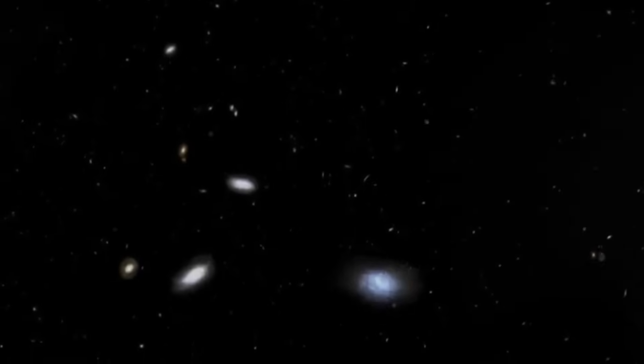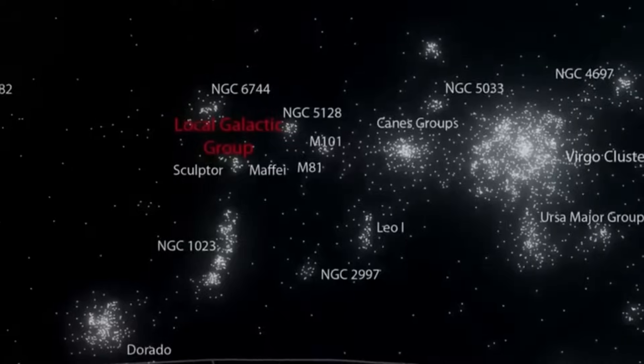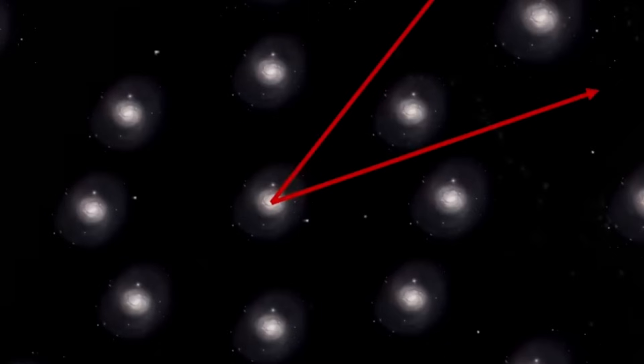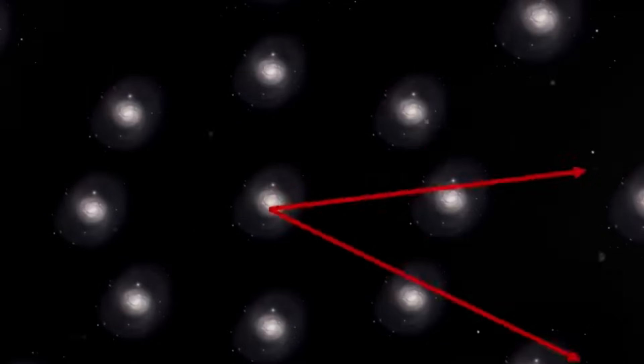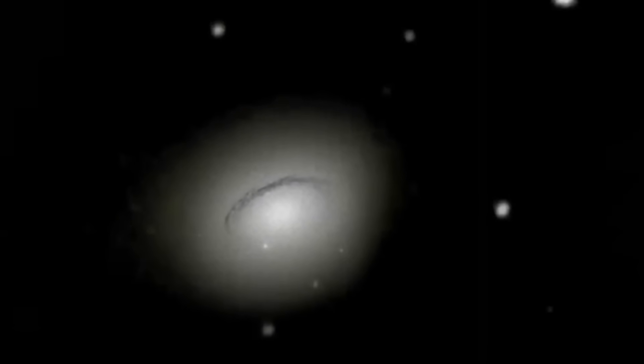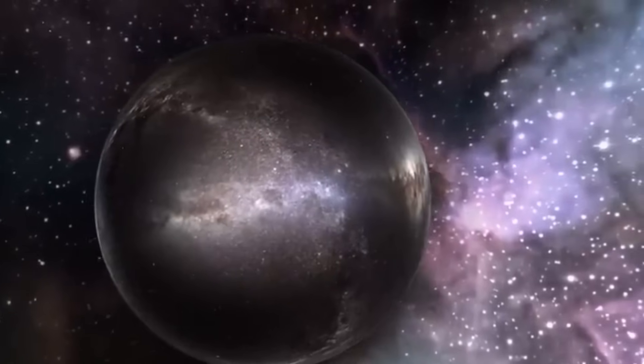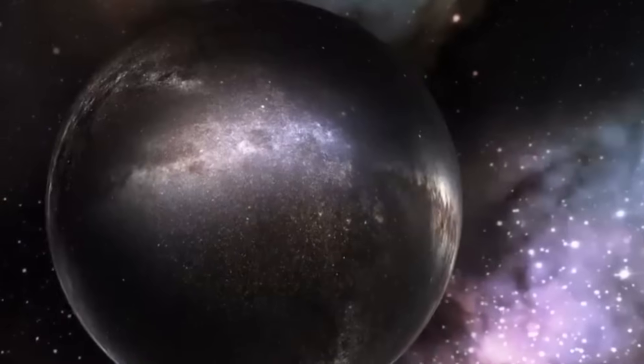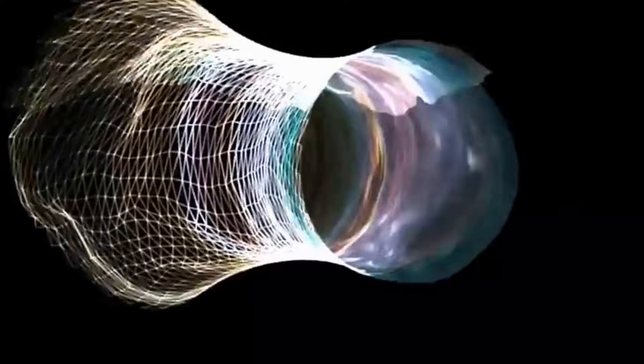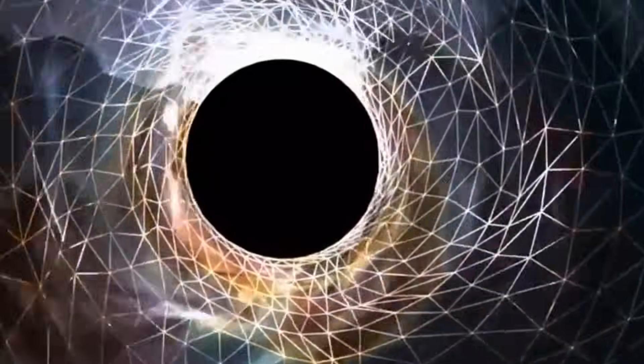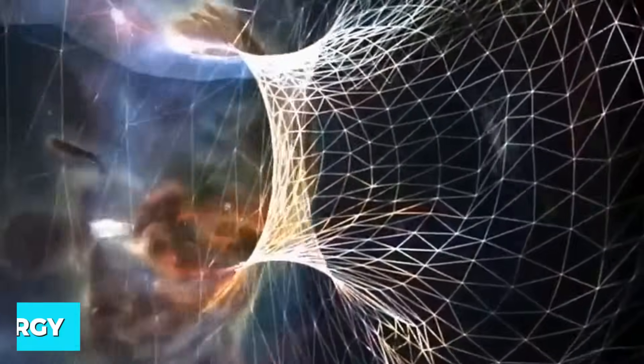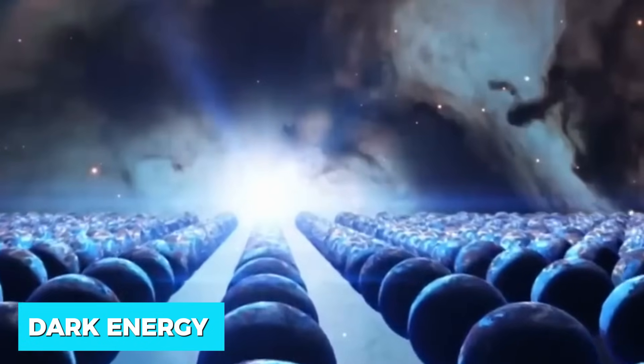While the complete size and shape of the entire universe are unknown, there is an estimated diameter of the observable universe which is around 93 billion light years. But why is the universe so incredibly vast? The answer lies in its origins. The Big Bang theory tells us that approximately 13.8 billion years ago, the universe was born in a powerful explosion. This explosive event triggered a rapid expansion, and since then the universe has been expanding at an increasingly faster pace, driven by enigmatic forces like dark energy.